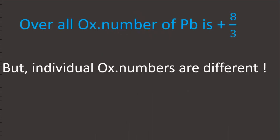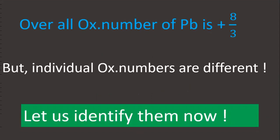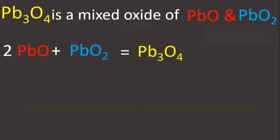But individual oxidation numbers of lead are different. Let us identify them now. Pb₃O₄ is a mixed oxide of PbO and PbO₂: two molecules of PbO and PbO₂. The mixture is called Pb₃O₄.